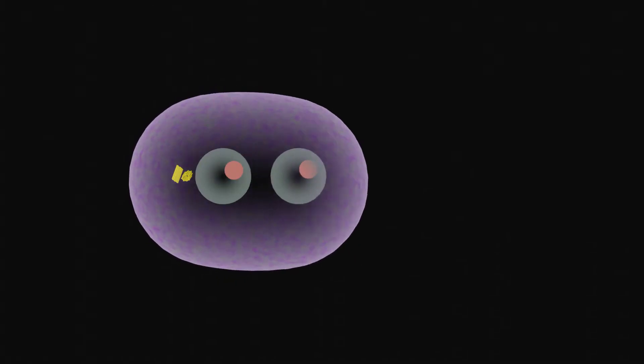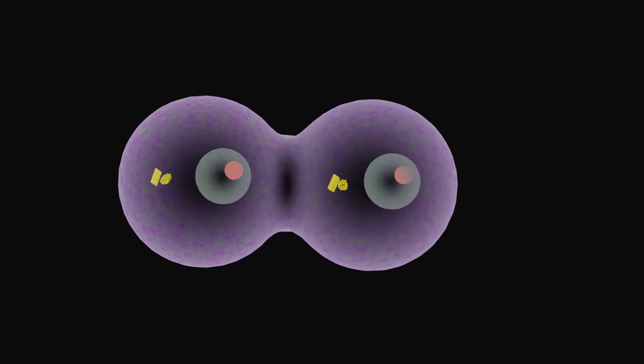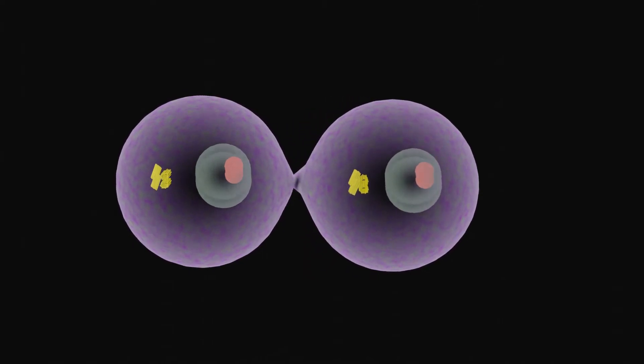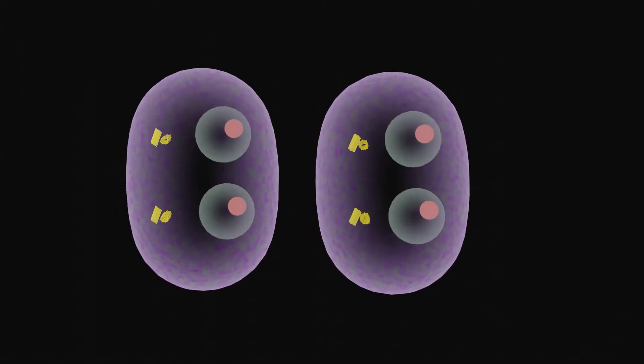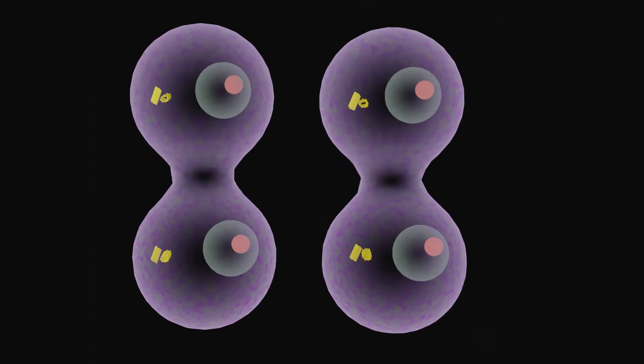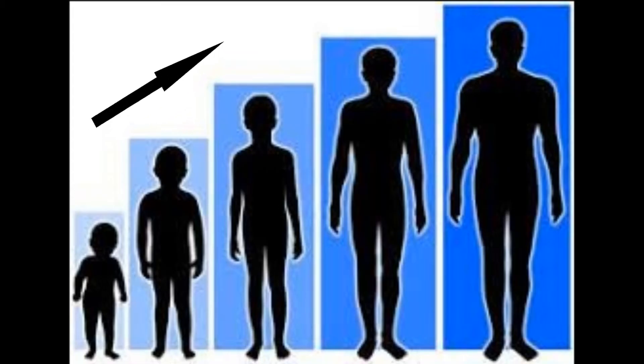Mitosis is a type of cell division in which one cell divides to produce two new cells that are genetically identical to itself. Mitosis is a way of making more cells, which helps the organisms to grow in size.